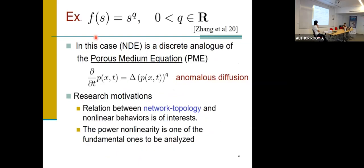For example, if we choose F is power s powered by q, then in this case, our network diffusion equation (NDE) can be regarded as a discrete analog of the famous equation called porous medium equation (PME). This equation is known to exhibit anomalous diffusion phenomena.